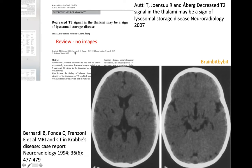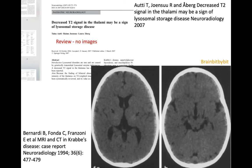There is involvement of gray matter structures, and there may be a low T2 signal in the thalami. On CT there are faint calcifications in the thalami and symmetrically in the brainstem. Krabbe's disease is one of the few diseases where the CT findings might precede the MRI abnormalities, so in doubt, do a CT.